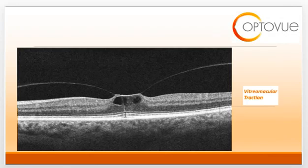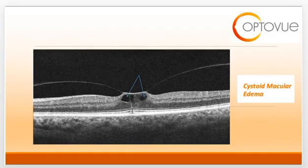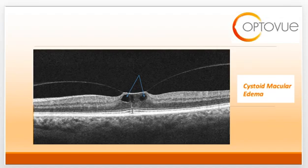Oftentimes VMT will resolve spontaneously; however, when it does not, it results in a myriad of complications. One of those is the development of cystoid macular edema. You can see on this scan that the vitreous is focally pulling at the fovea, resulting in the formation of these hyperreflective areas which are cystoid fluid. If the vitreous does detach, those areas of cystoid fluid will spontaneously resolve.